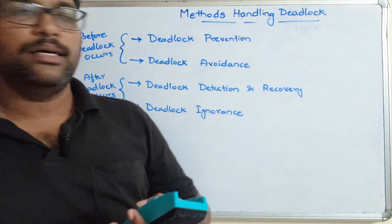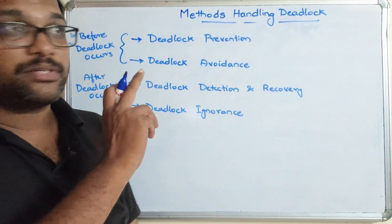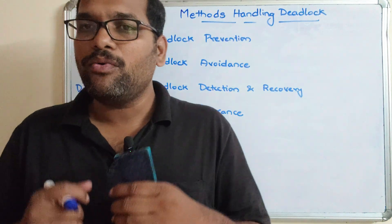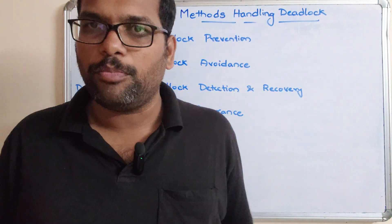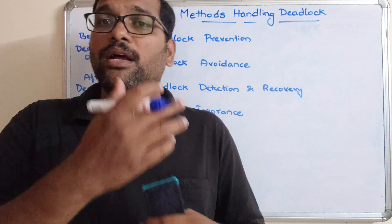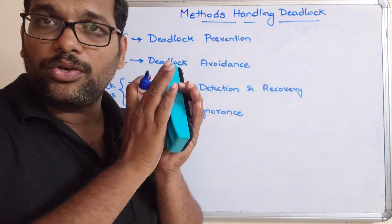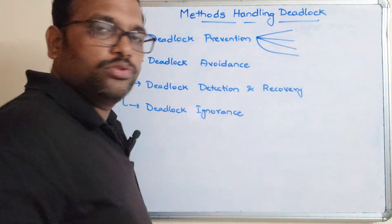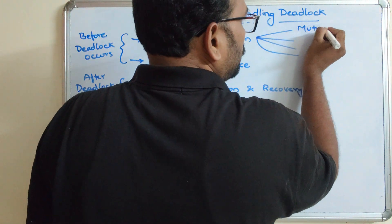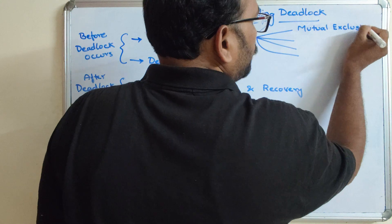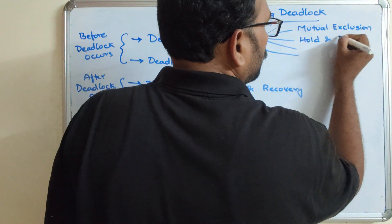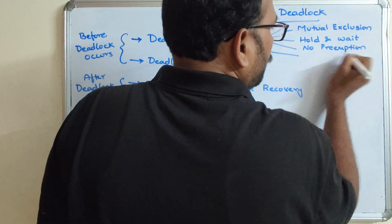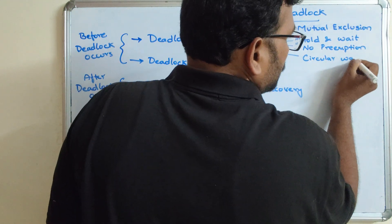The name itself indicates what deadlock prevention means: before reaching a deadlock situation, we have to make sure that deadlock is not possible. We need to take care of the scenarios and processes we are using. We know the four conditions that may cause a deadlock: mutual exclusion, hold and wait, no preemption, and circular wait.